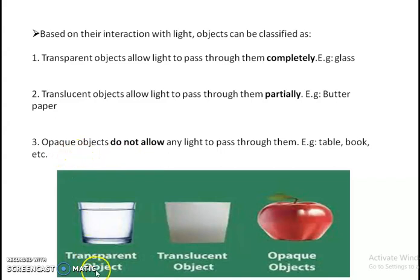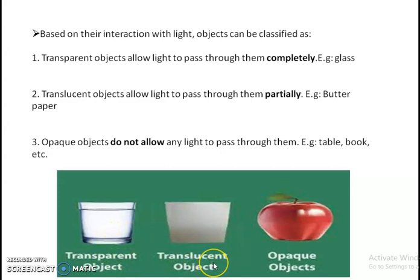So transparent objects allow every light to pass through them. Translucent objects allow only a little amount of light to pass through them, and we cannot see the other side clearly. Opaque objects do not allow any light to pass through them.